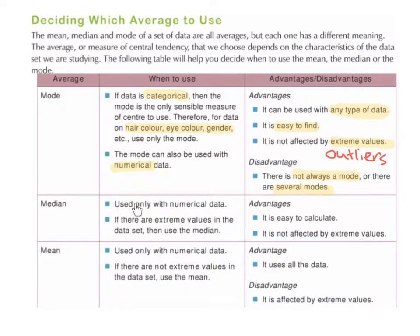The median is used only with numerical data, so only to be used with number data. And the median is to be used if there are extreme values in the data set, such as we talked about a minute ago, outliers. So we use the median if we have extreme values.